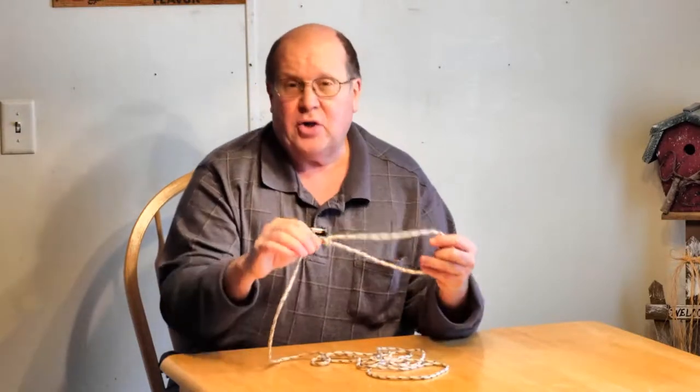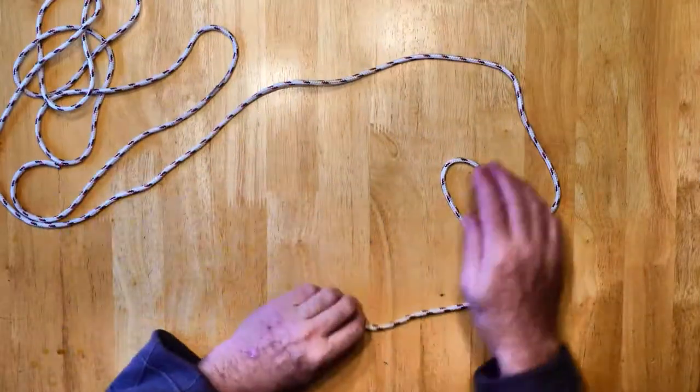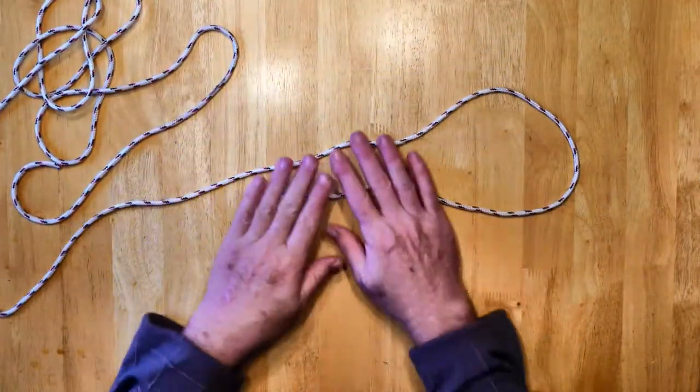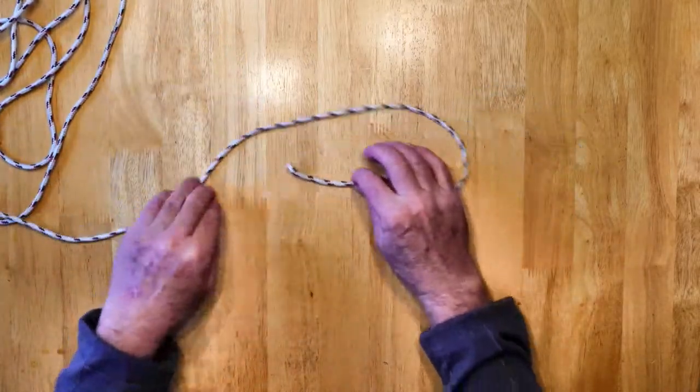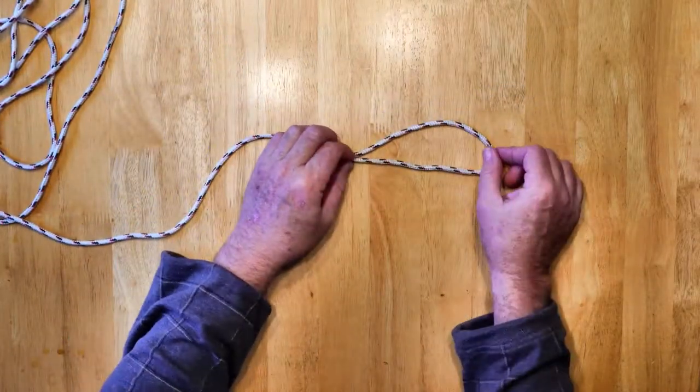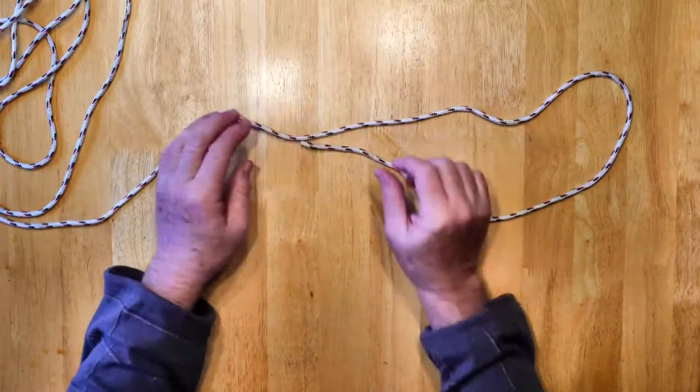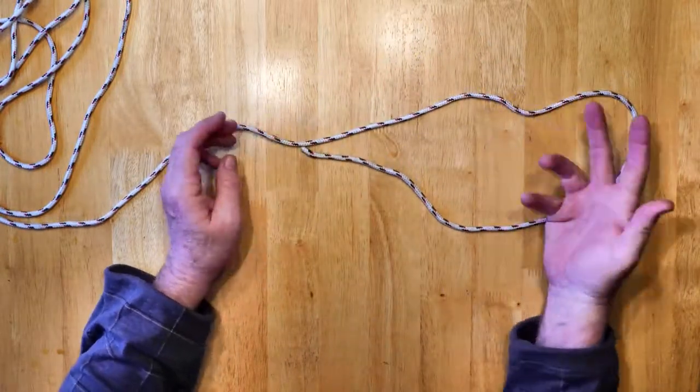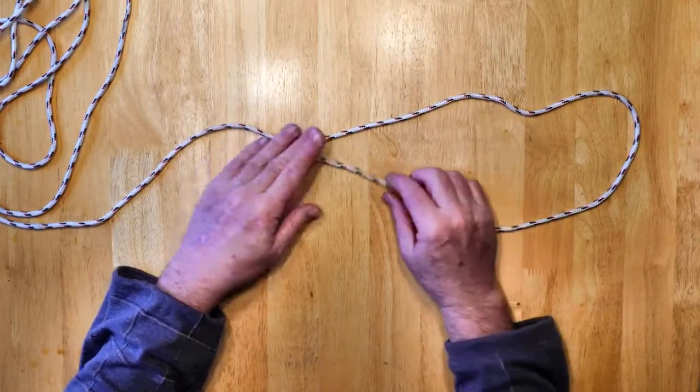So I'm going to get the camera overhead and show you how to make this right here on the table. Okay, to get started, first off you need to decide how much of a loop that you want, how big of a loop. Do you want a small loop? Do you want a big loop? Whatever. The nice thing about this is that you can make a loop however size you want.